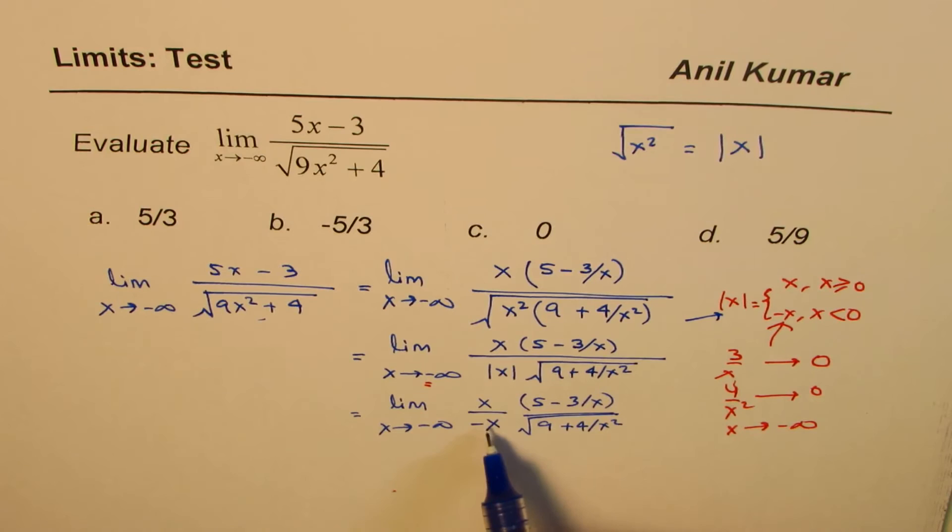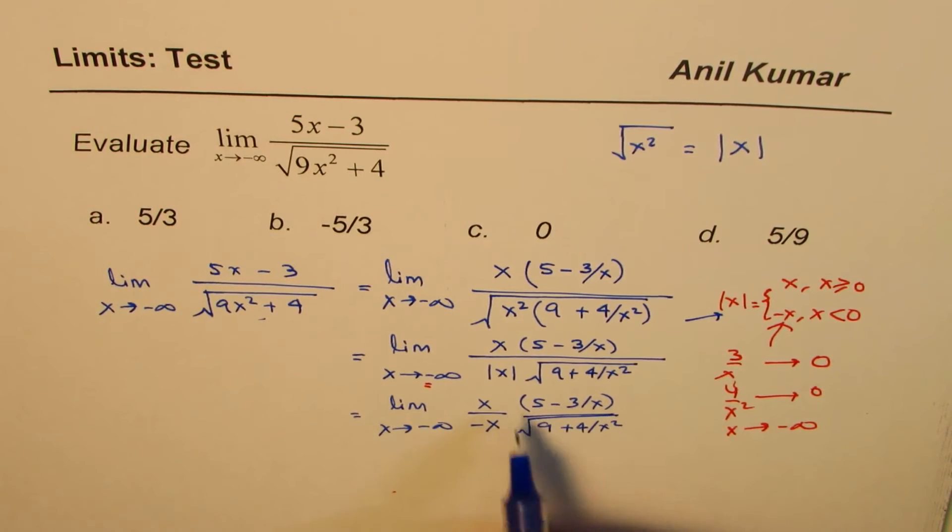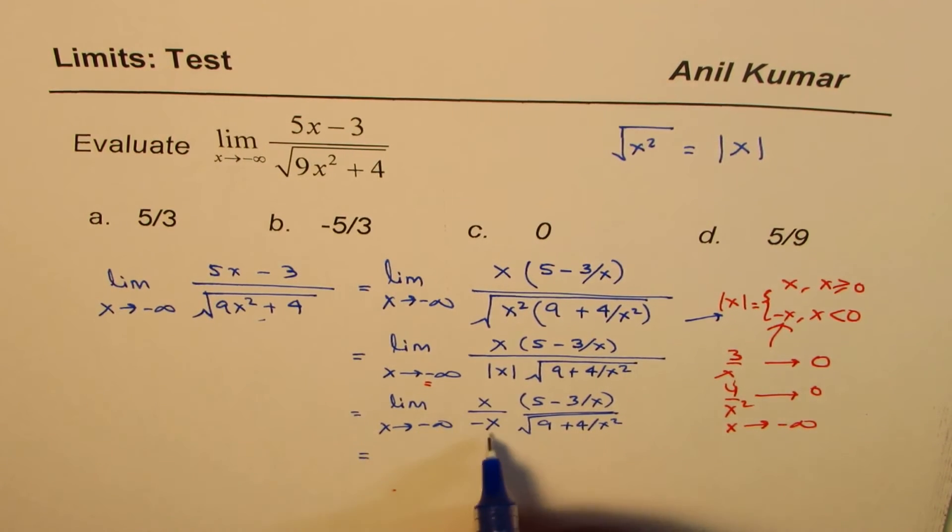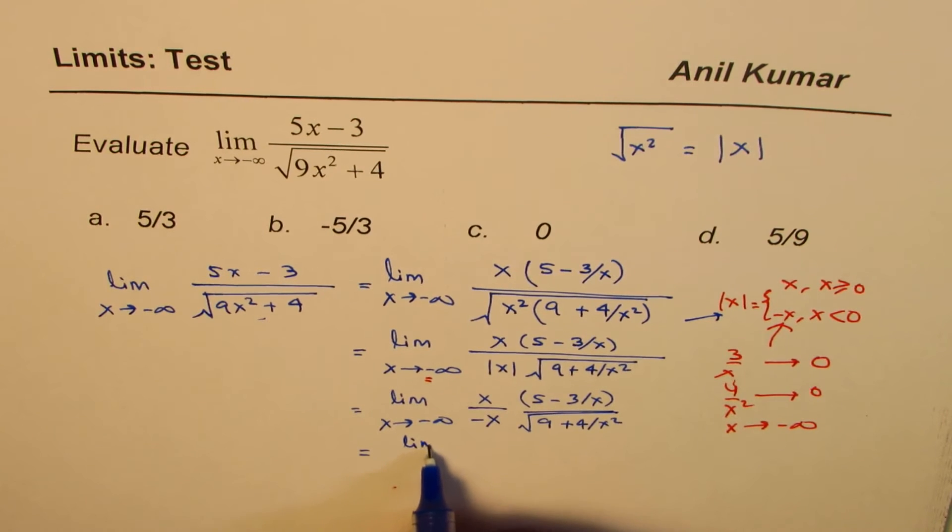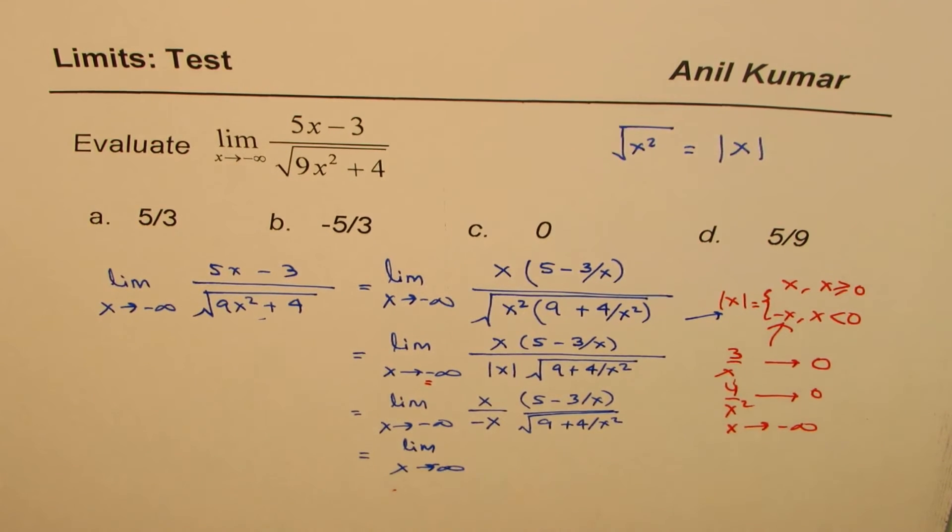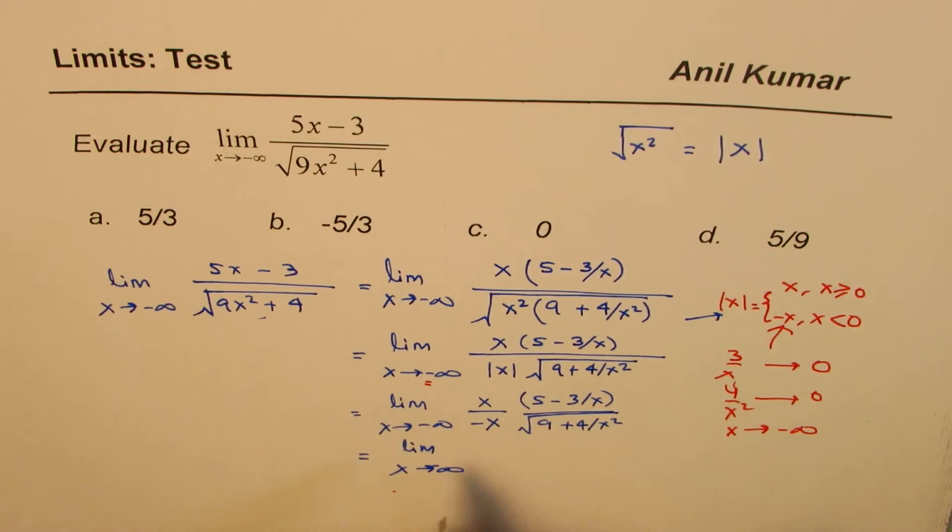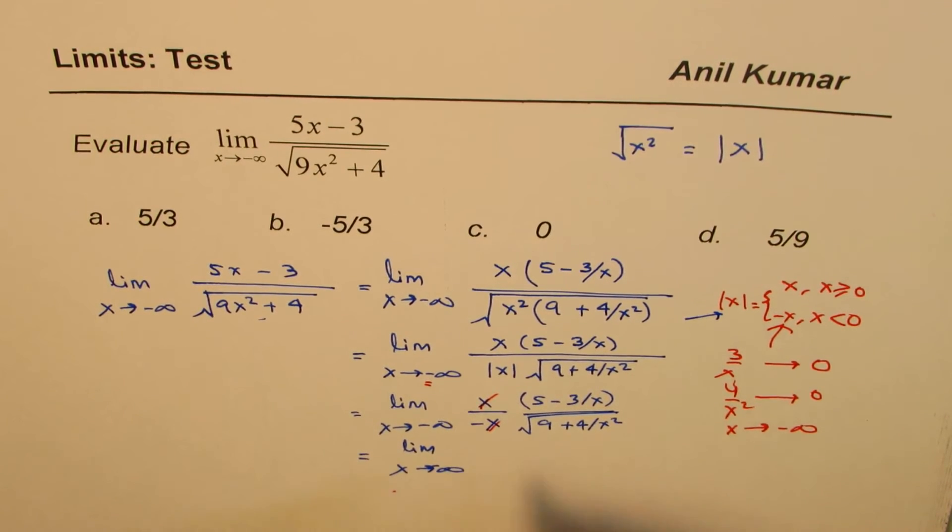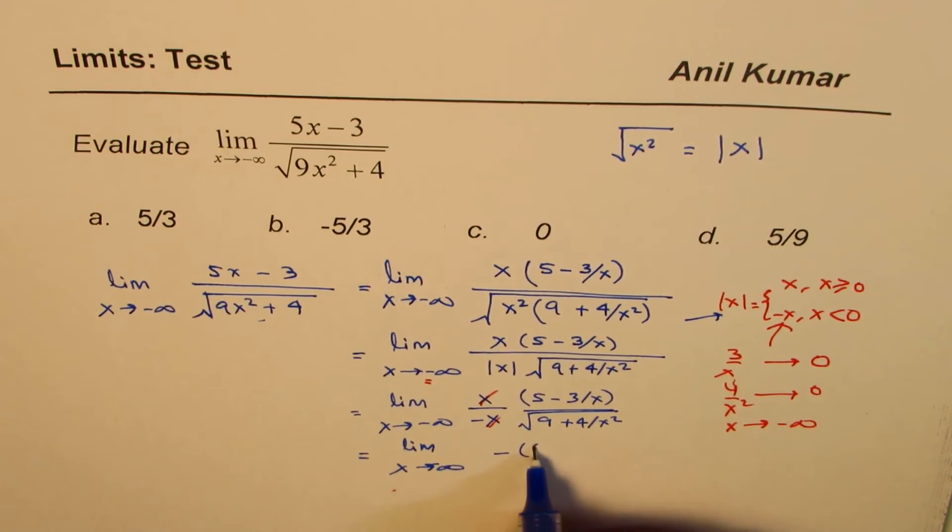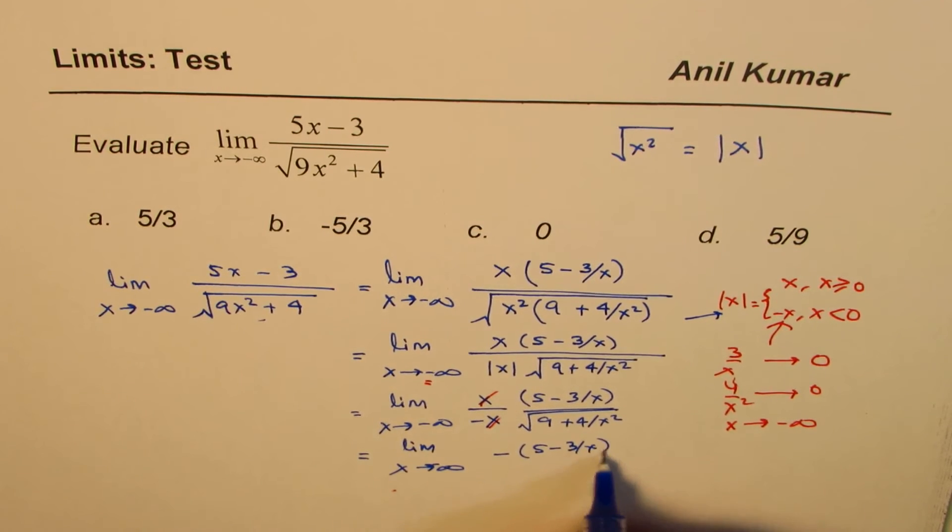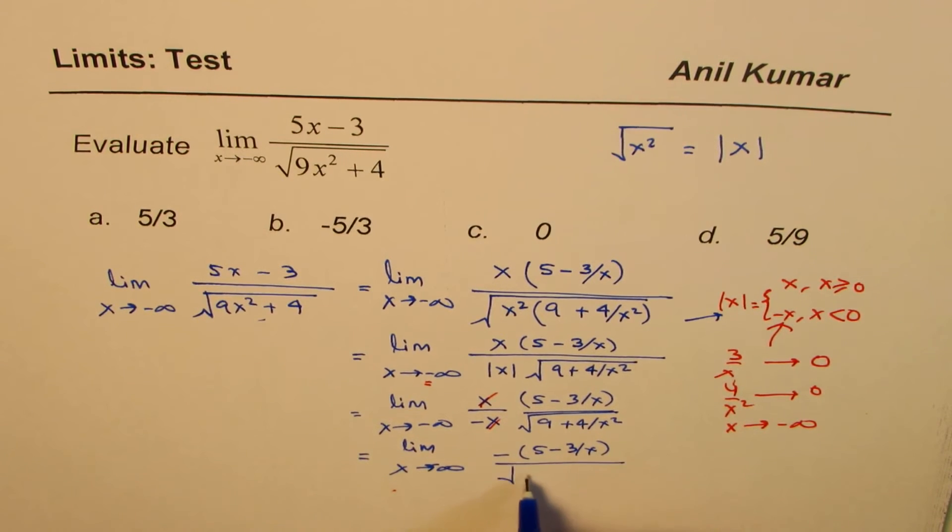So the absolute value of x is minus x. So when you cancel these, you get minus in the numerator. Now when you cancel these, we have limit x approaches minus infinity. We just cancel these. So we have minus of 5 minus 3 over x divided by square root of 9 plus 4 over x square.